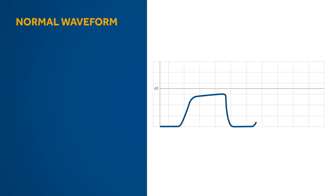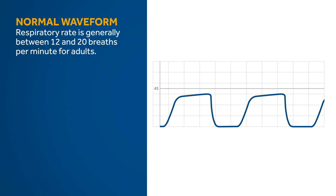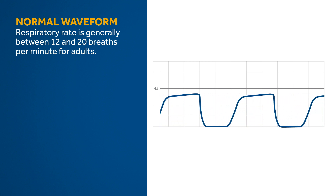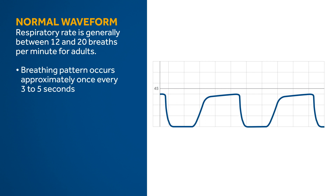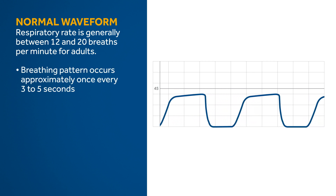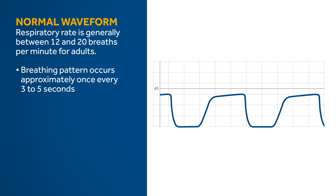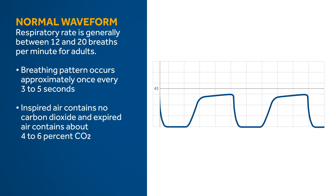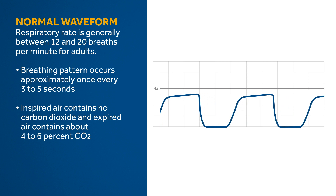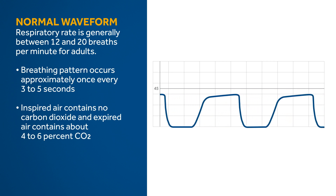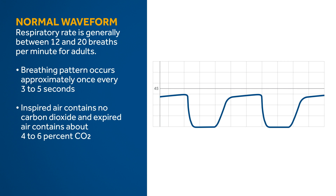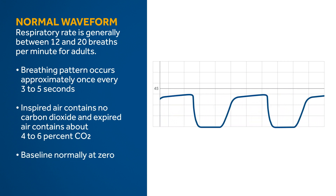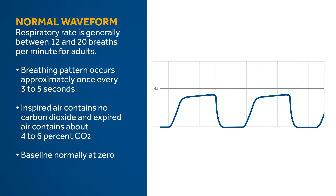With a normal waveform, respiratory rate may vary, but is generally between 12 and 20 breaths per minute for adults. The breathing pattern, or rhythm, is usually regular and occurs approximately once every three to five seconds. Under normal circumstances, inspired air contains virtually no carbon dioxide and expired air contains about four to six percent carbon dioxide. Because there is virtually no CO2 in the atmosphere, the baseline is normally at zero.